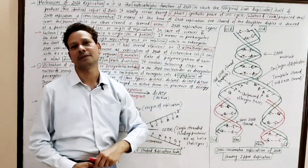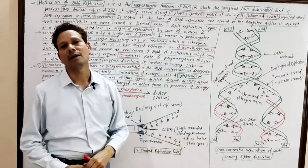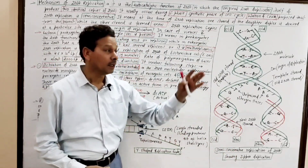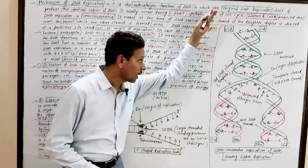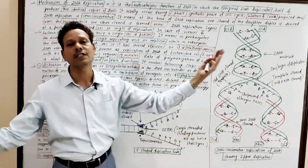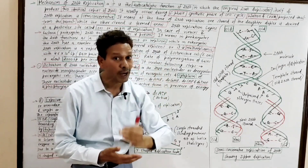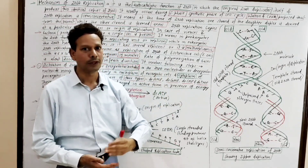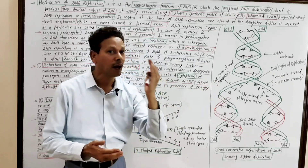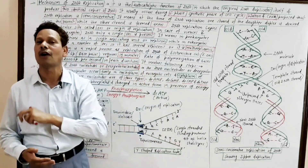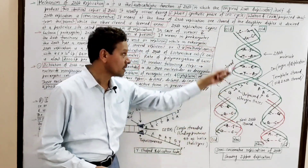According to Watson and Crick, who proposed the DNA model, DNA replication is a semi-conservative mode of replication. Semi-conservative means half of the DNA remains parental and half of the DNA is newly formed.